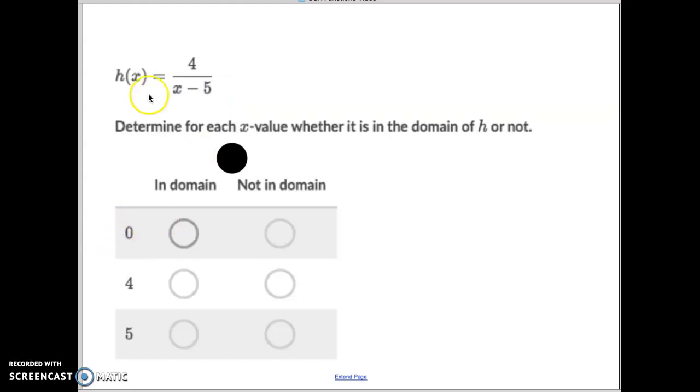So like if I were to plug 0 in for X, 0 minus 5 is negative 5, that's okay. So I can plug a 0 in there. I just can't have this bottom equation equaling 0. 4 minus 5 is negative 1. That's no big deal. That's okay. But 5, 5 minus 5 is 0. So if I plug a 5 in for X, now I'm equaling 0 and I can't do that. So the only one that doesn't work in this case is 5. You can't have 5 in there, which would equal 0 in the denominator.